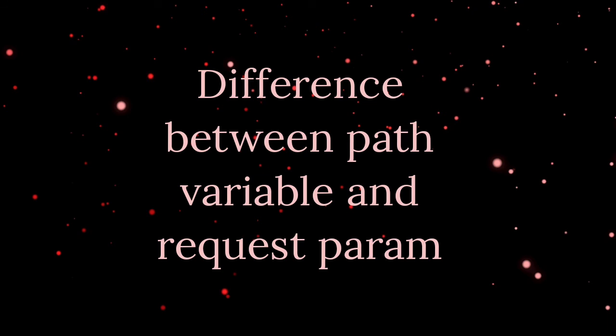The next question was: difference between @PathVariable and @RequestParam. With PathVariable, the ID is passed directly in the URL path, like /1 or /2, and captured using @PathVariable. With RequestParam, the value comes after a question mark in the URL — for example, ?id=1 — so whenever the URL has a parameter after a question mark, you fetch it using @RequestParam.